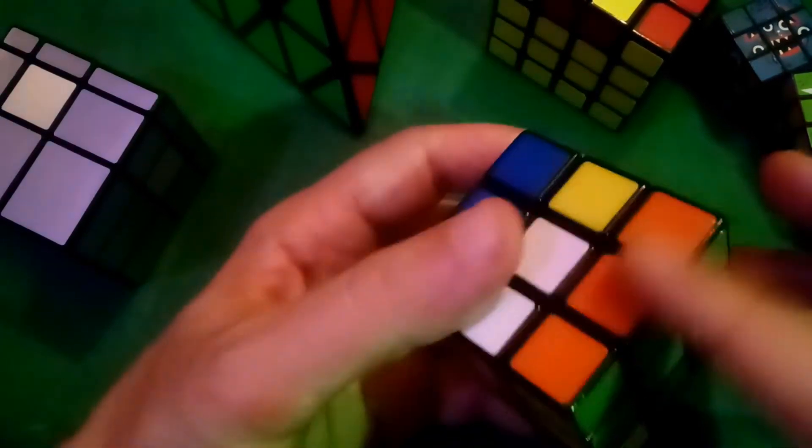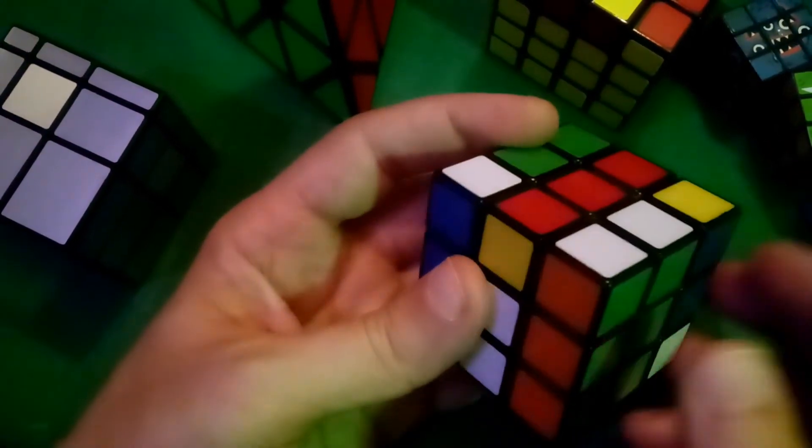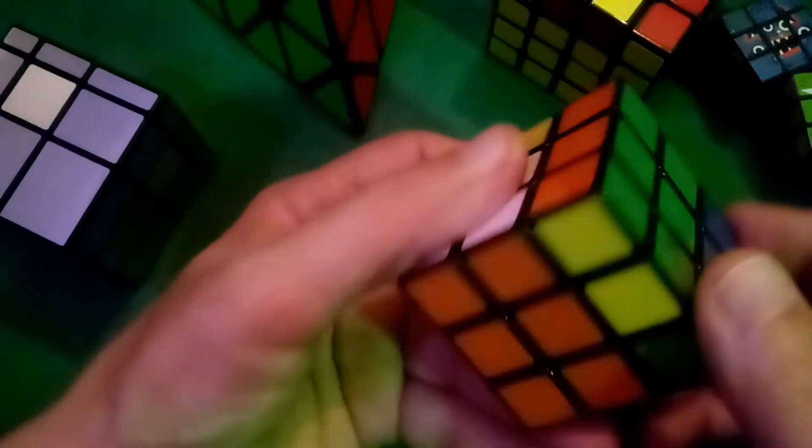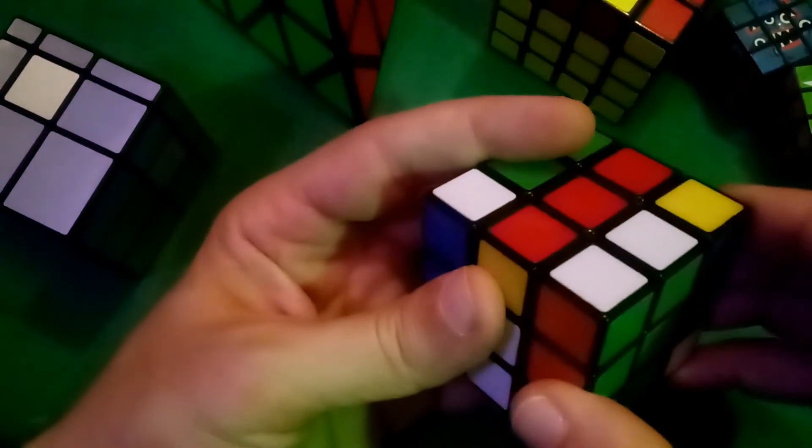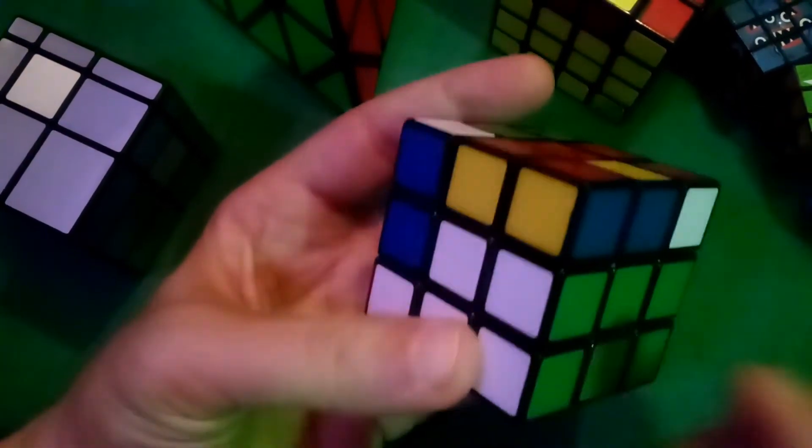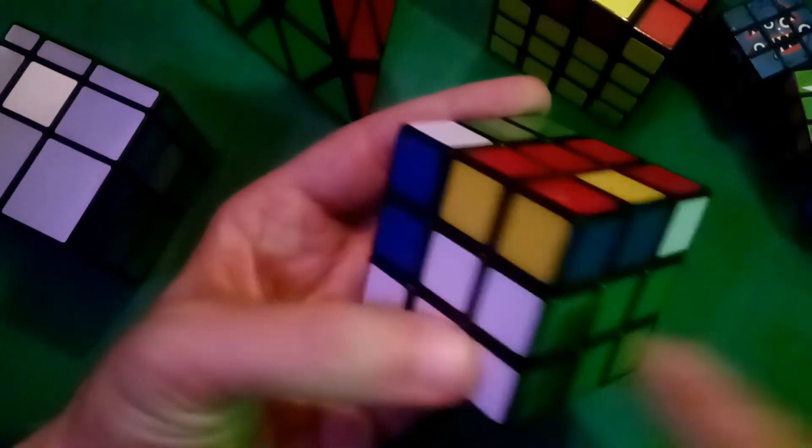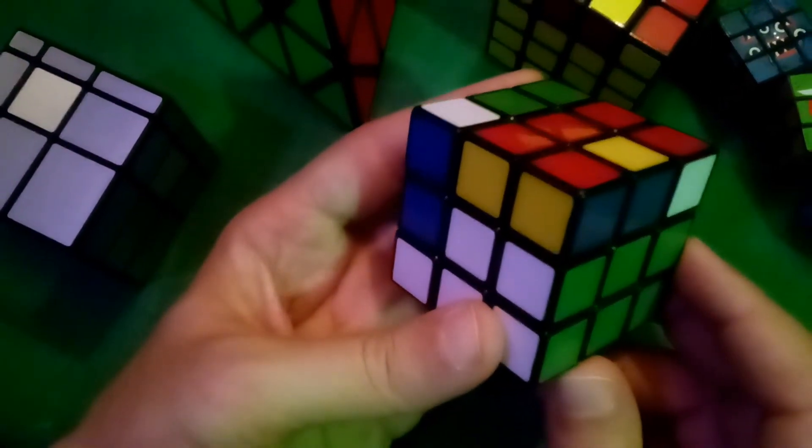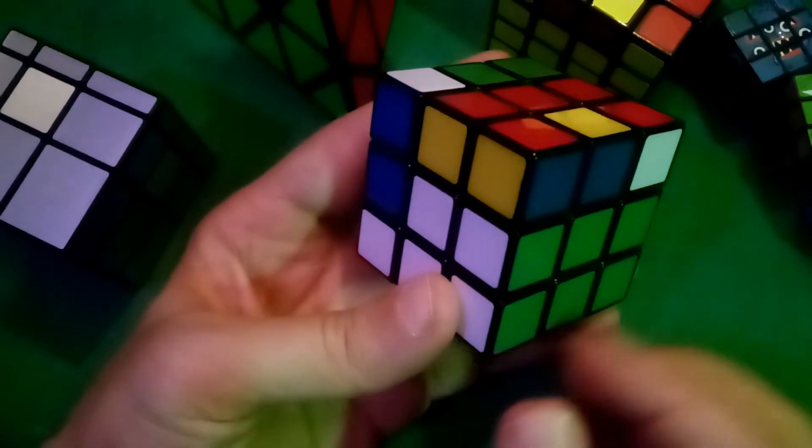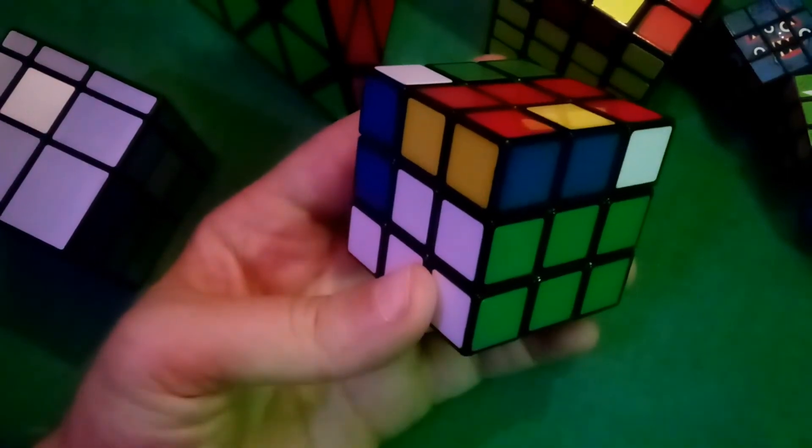And now, when we put that elevator back down, that whole orange line of three is going back down here, and that green white is placed back exactly where it goes. So, hopefully, that broke it down slowly and simply.